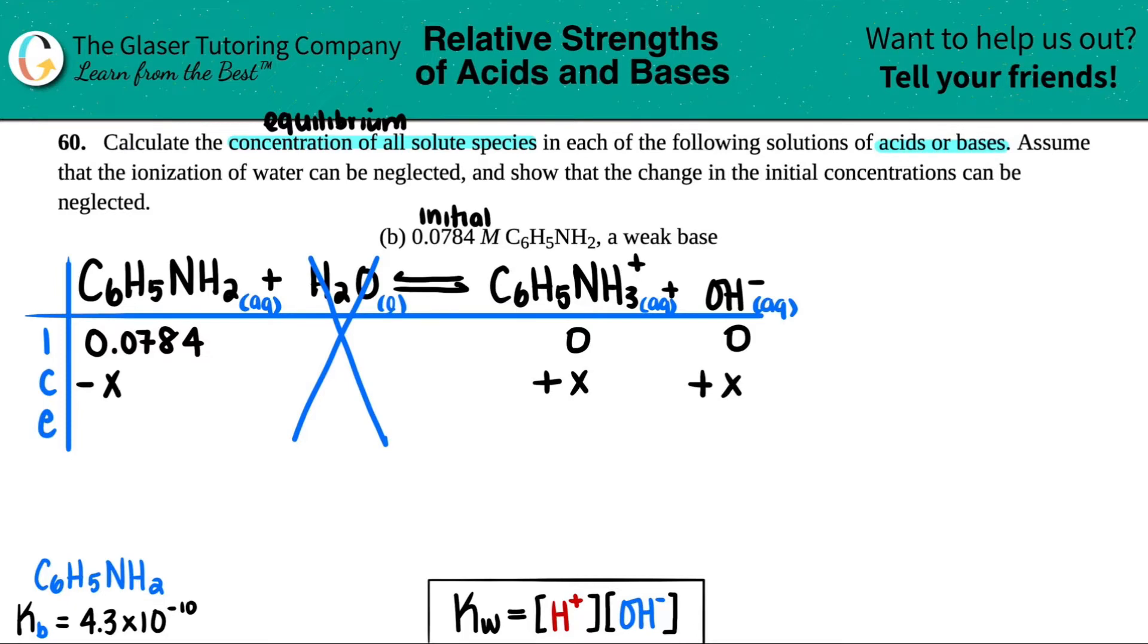And with acid bases, generally, your coefficients are always going to be one to one to one. So that's why you don't have to worry about minus 2x or minus 3x and so on. E stands for equilibrium. And that's just the initial and the change coming together. So 0.0784 minus x is 0.0784 minus x. 0 plus x is x. 0 plus x is x.